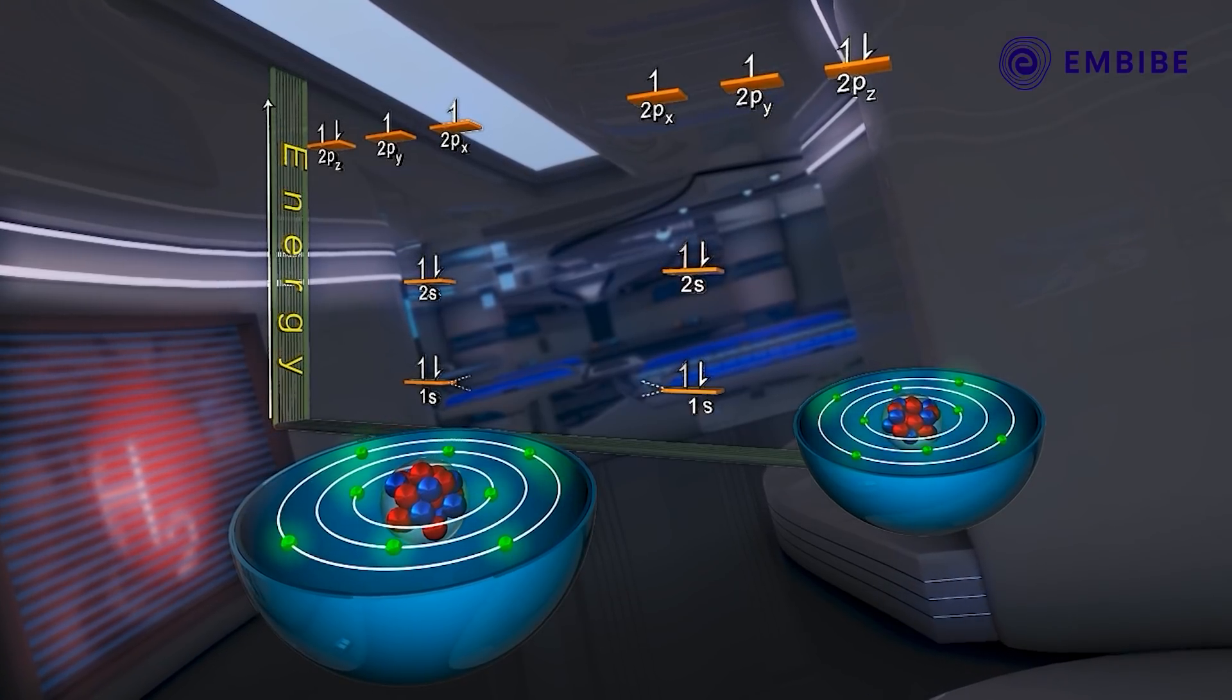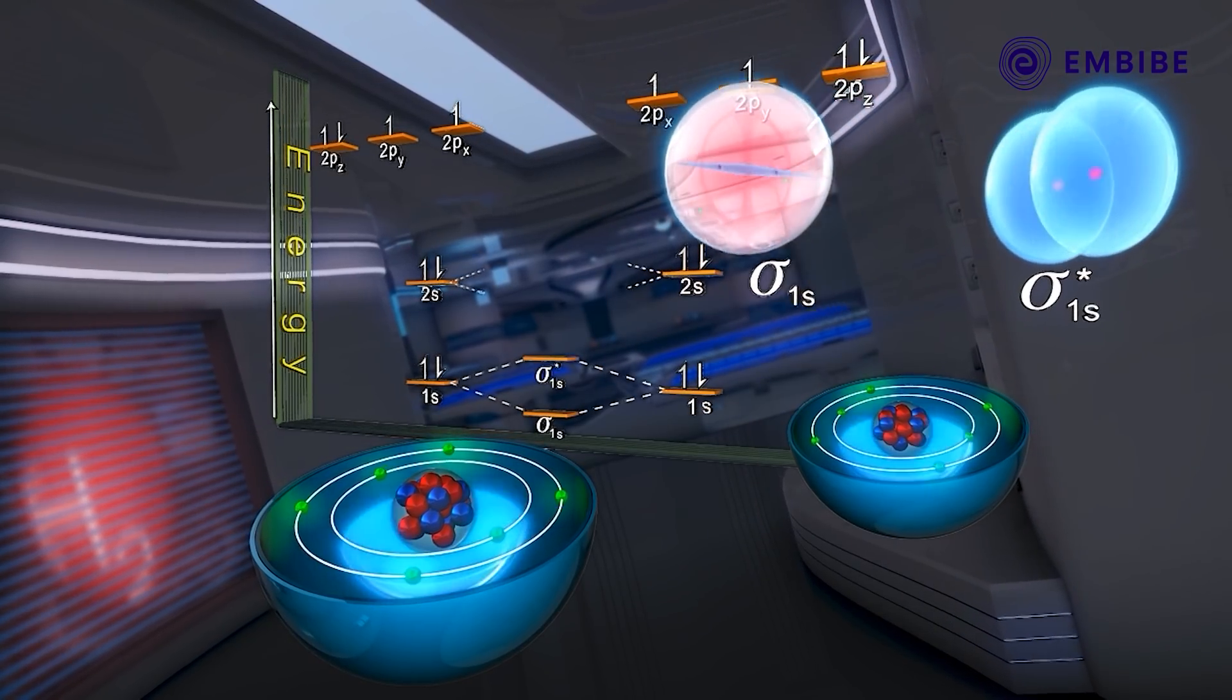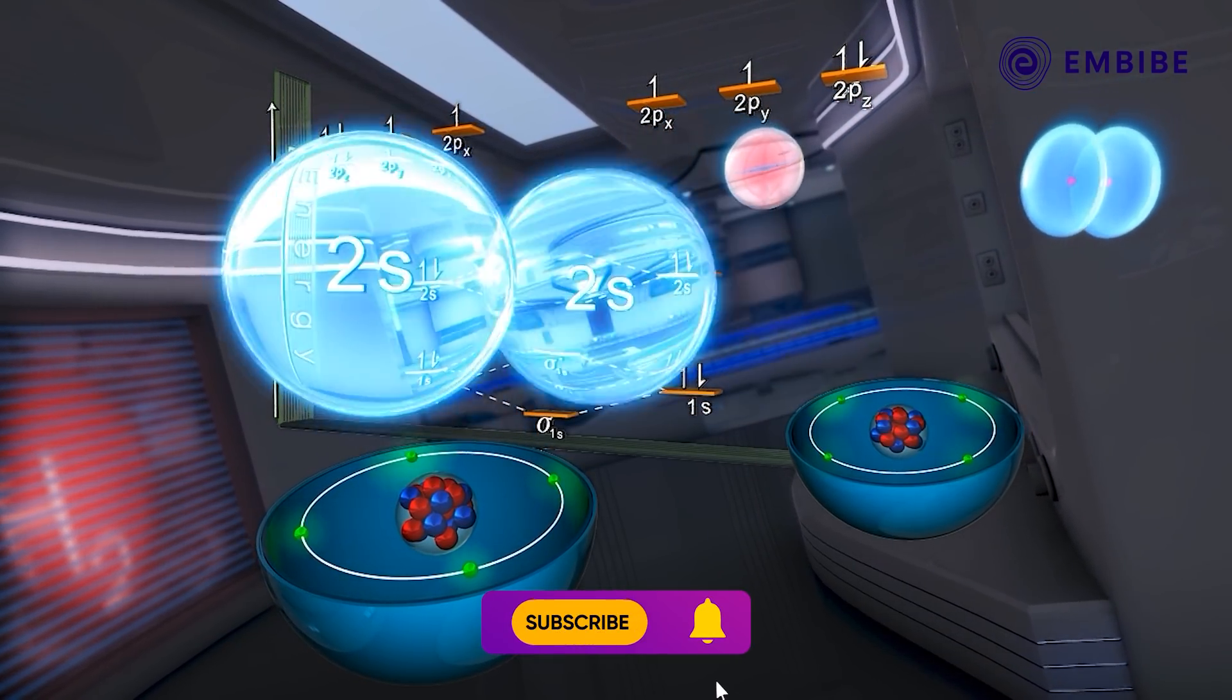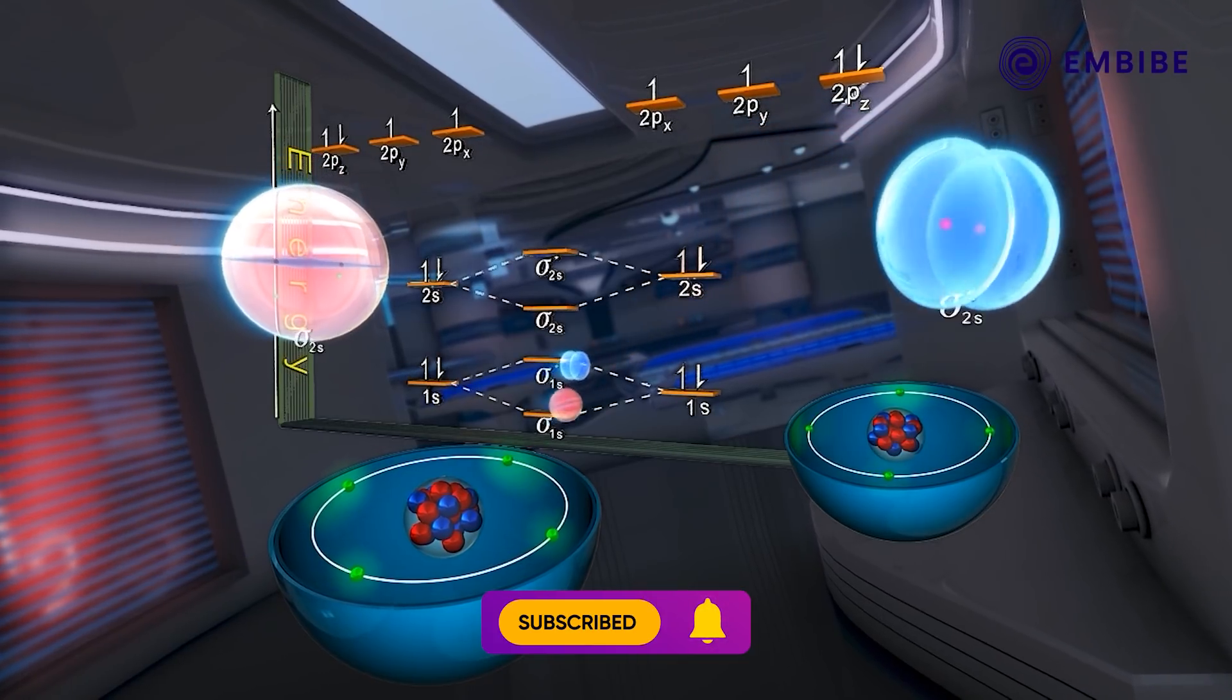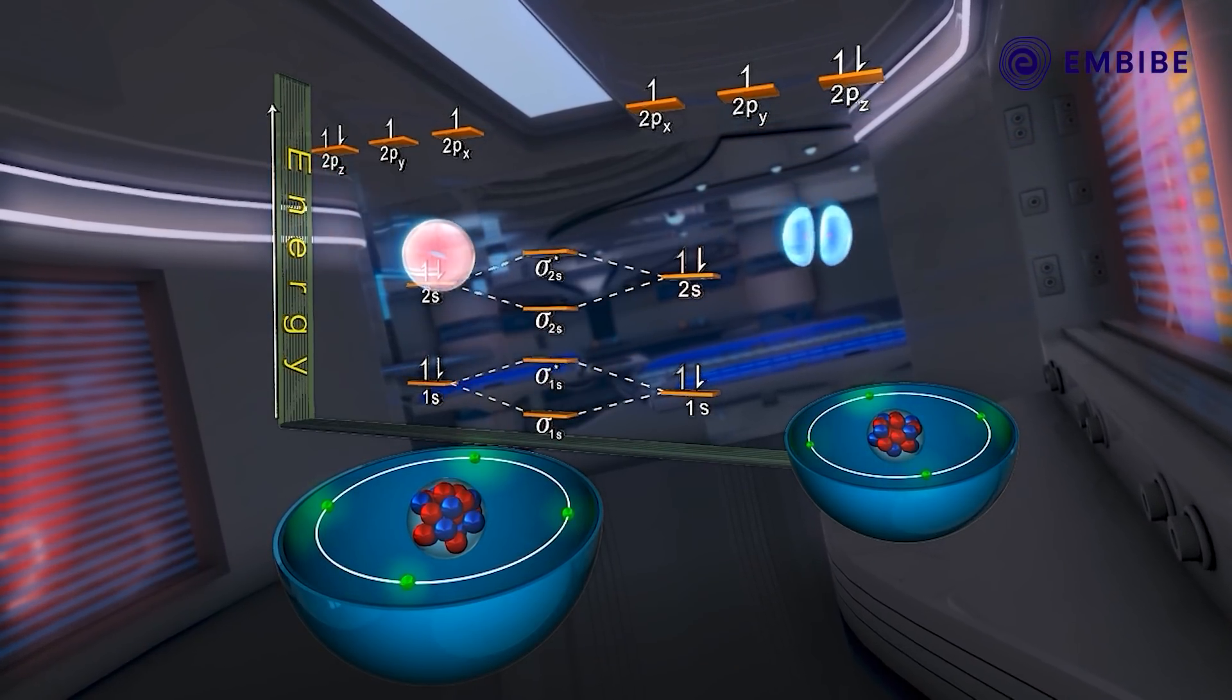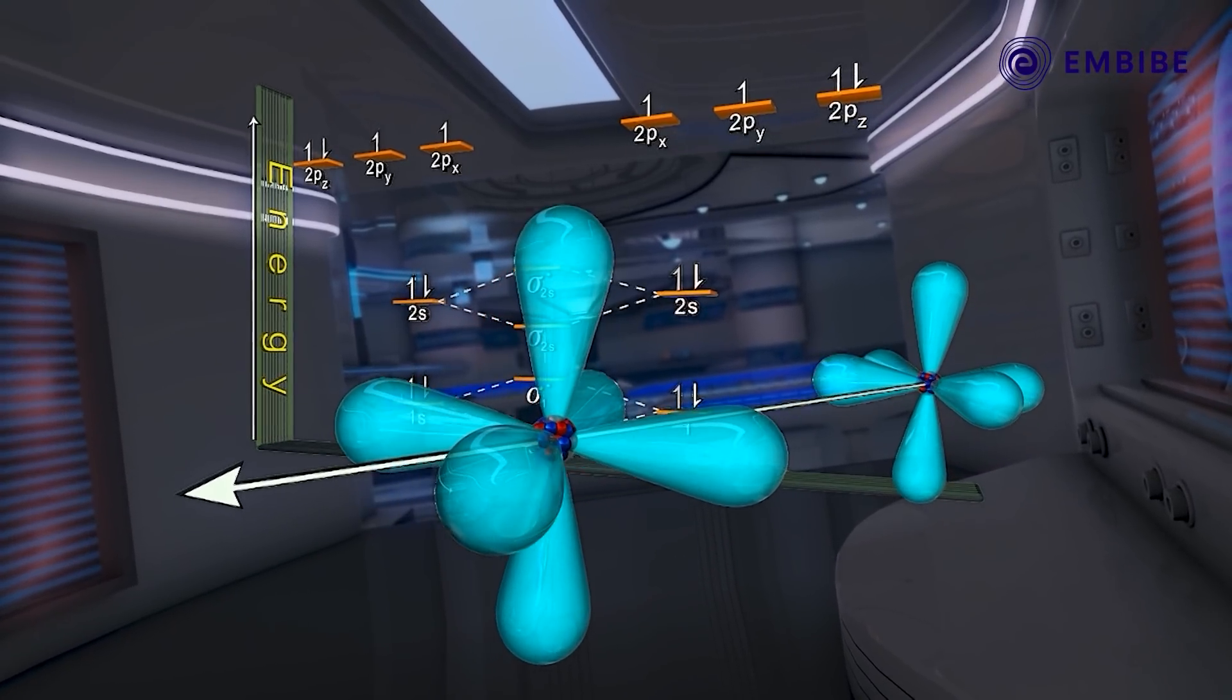The 1s and 2s atomic orbitals of these combining atoms form σ (bonding) and σ* (anti-bonding) molecular orbitals respectively. Let us arbitrarily choose the z-axis as the internuclear axis.